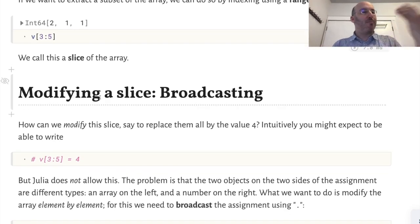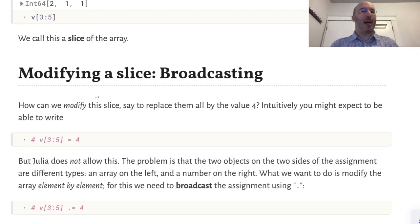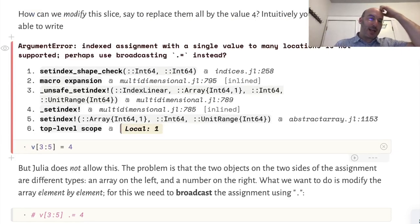What if I want to modify this slice? You might think you could extend the previous syntax by using v[3:5] = 4. But if I try that, I actually get an error. It tells me that on the left I have an array, but on the right I have a number, and it doesn't make sense to assign a number to an array.